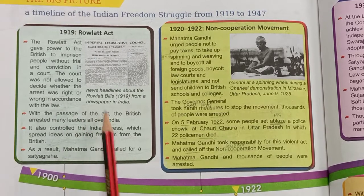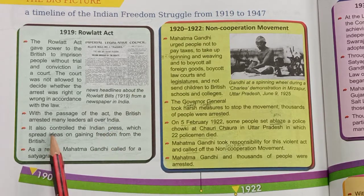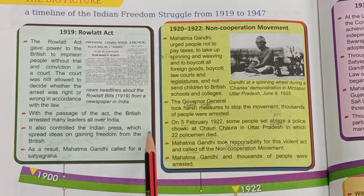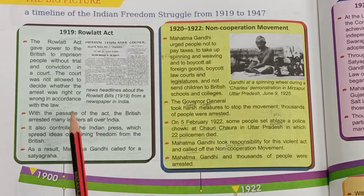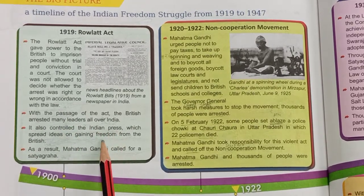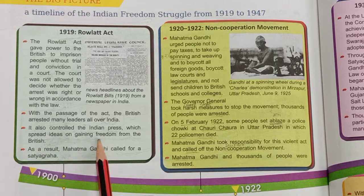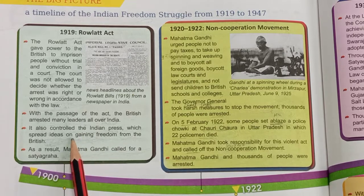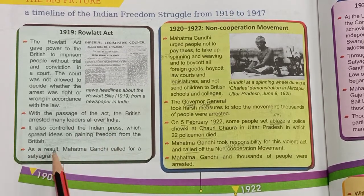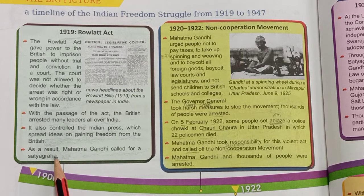With the passing of the Rowlatt Act, the British arrested many leaders all over India. It also controlled the Indian press, which spread ideas on gaining freedom from the British — they took control of the press that printed ideas about how to get freedom. As a result, Mahatma Gandhi called for a Satyagraha — a movement based on truth and peaceful means.